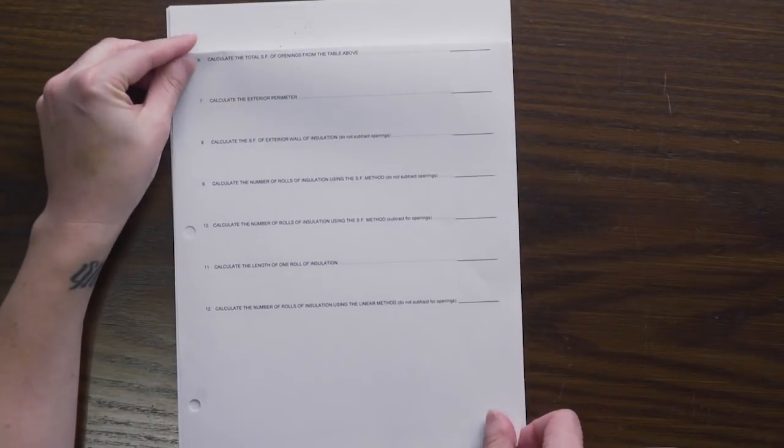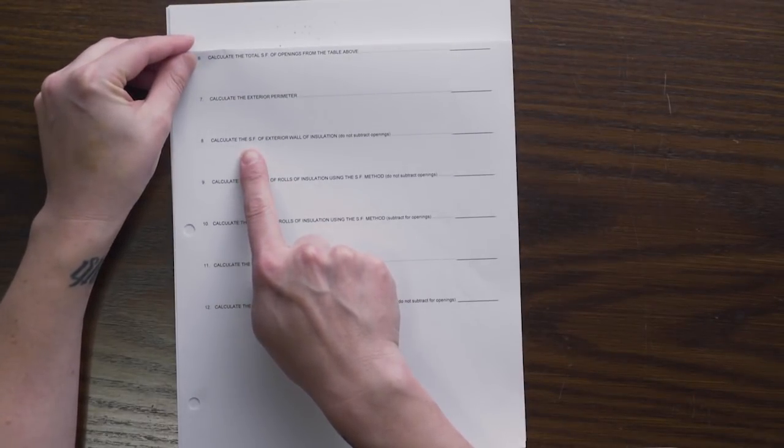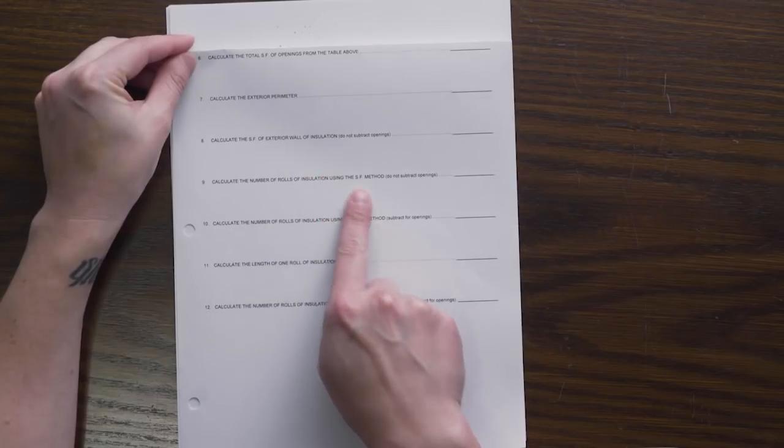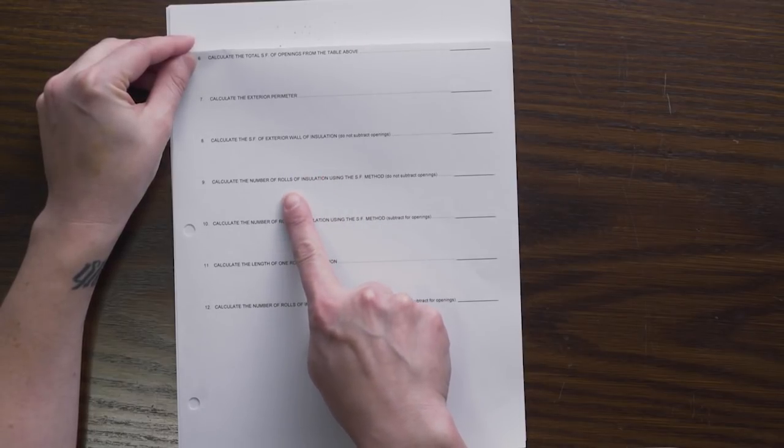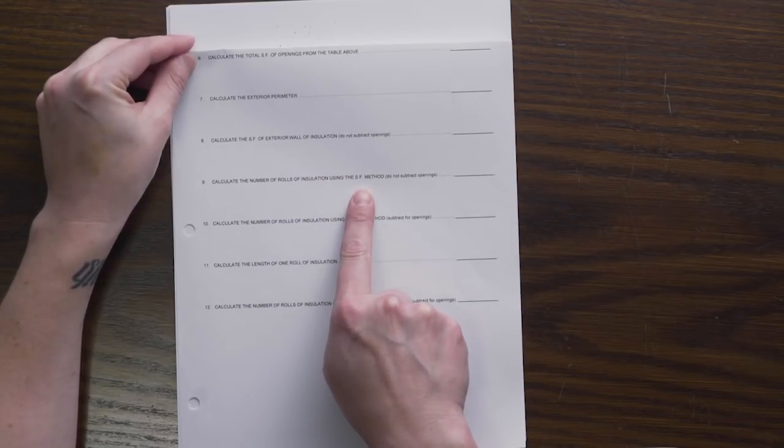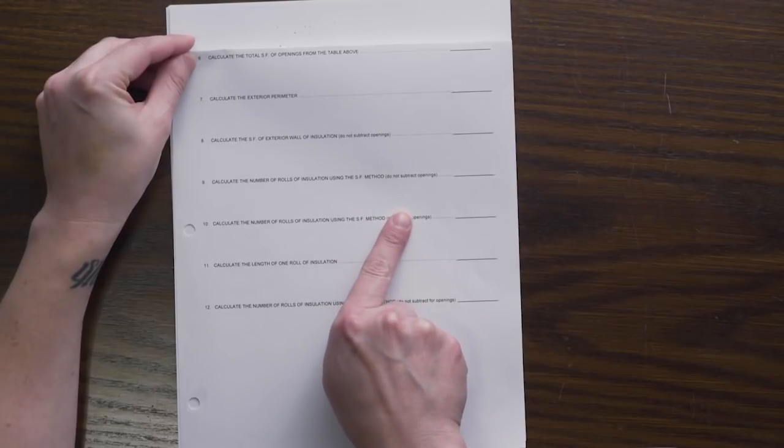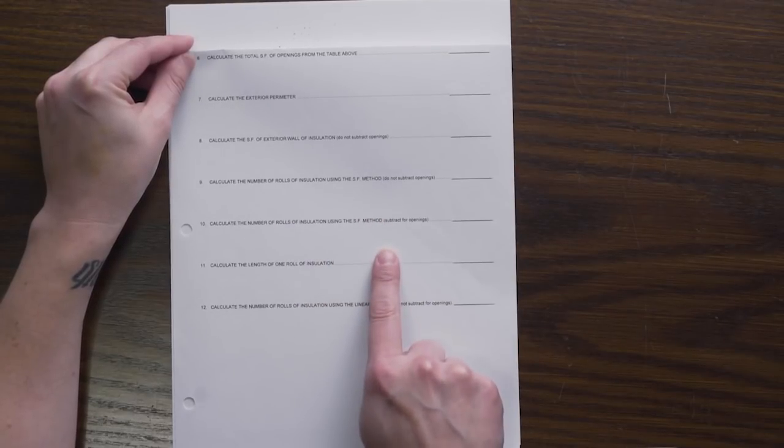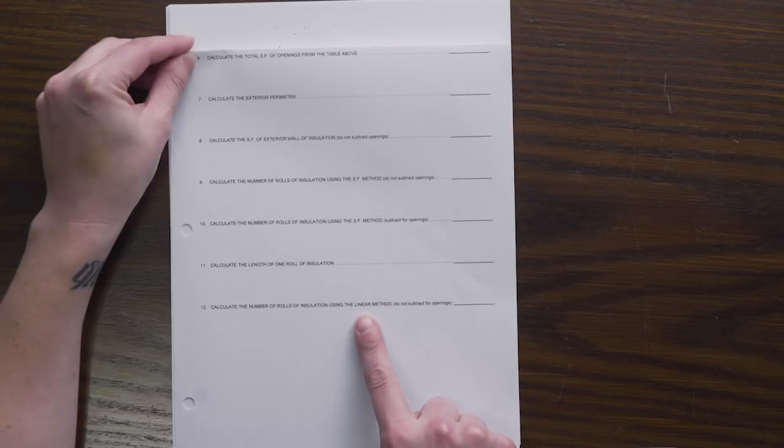For the second problem set we're going to be looking at the square footage of insulation to help us determine how many rolls of insulation we need using the square foot method. Then we will do the similar process but we will look at the linear method to determine the number of rolls.